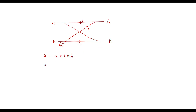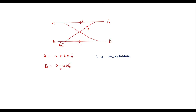Similarly B = a − b·W_N^r. Here we can observe that for one butterfly, b is multiplied with W_N^r in both output expressions, so we need one multiplication. We also have one addition and one subtraction. Since addition and subtraction have the same complexity, we treat these as two addition operations. So for each butterfly diagram we need one multiplication and two additions.